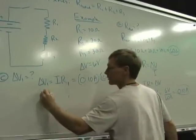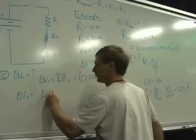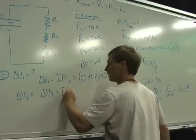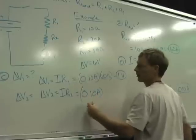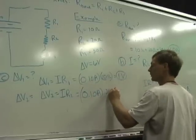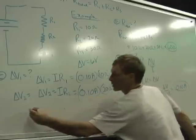Across the second one, current times second resistance, I have 0.10 amps, same current through all of them, times 20 ohms gives me 2 volts.